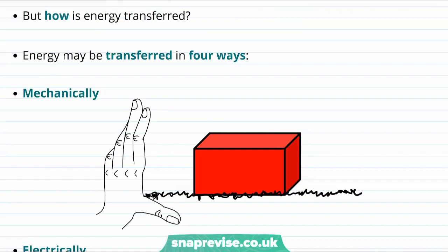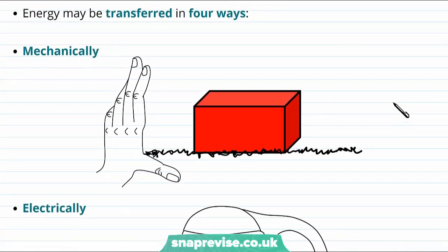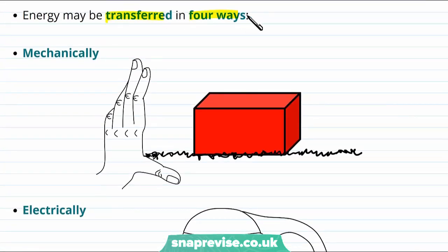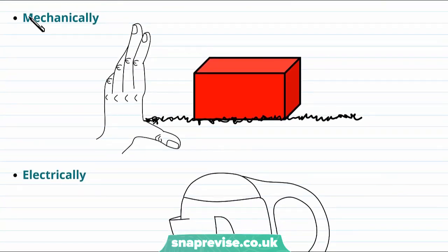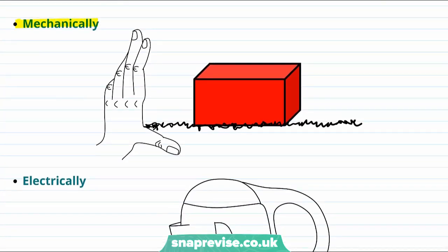We've seen an example of energy transfer in a system, but something that might seem a bit mysterious is how was the energy actually transferred? It turns out that energy can be transferred in four different ways. First of all, energy can be transferred mechanically. We transfer energy to a system mechanically when we push or pull on it. For example, if we used our hand to slide a block along a table, we would say that we had transferred kinetic energy to this block mechanically.